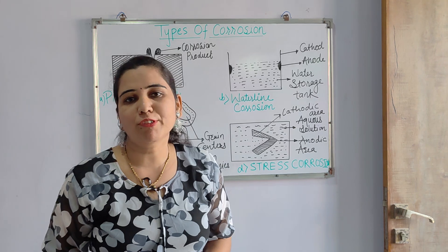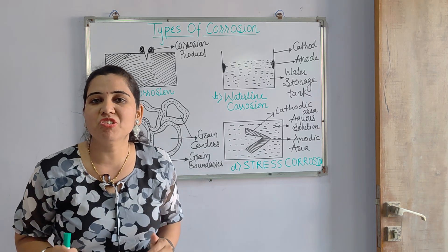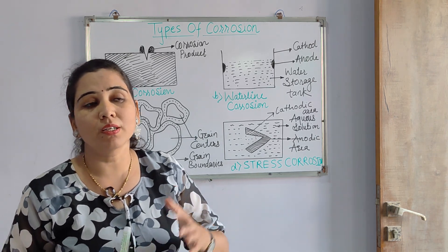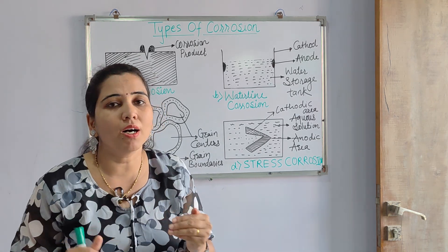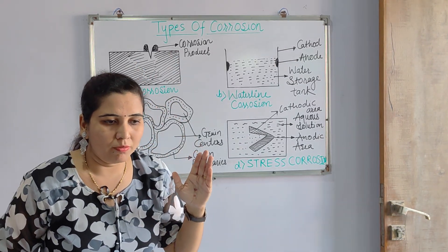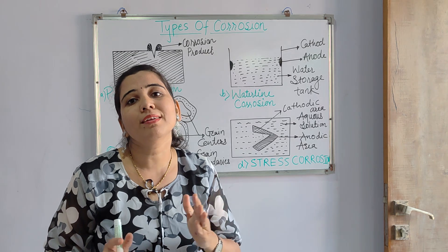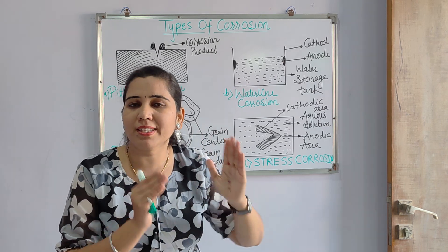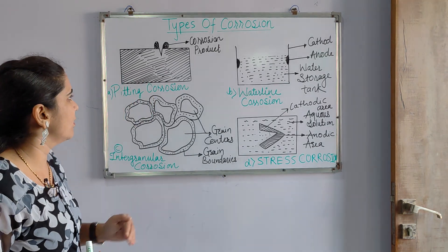Hello students, myself Dr. Jyoti Shri Gokar. I welcome you to my YouTube channel, Chemistry in Engineering, which is made for the study of engineering chemistry. Today we will deal with the types of different corrosion. We have seen all the types of corrosion in different videos, but in order to get all the types of corrosion in a single video, this small attempt is made today. Corrosion is of two main types: chemical corrosion and electrochemical corrosion, but there are different specific examples of corrosion under each.